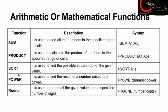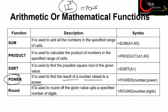Our next function is the POWER function, which is a very interesting and important function in MS Excel. It is used to calculate the result of a number raised to a given power. For example, to calculate 12 raised to the power 3, we write equals to POWER(12, 3) in brackets and press the Enter key, and it will give us the result.